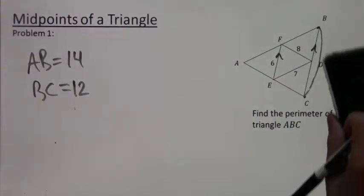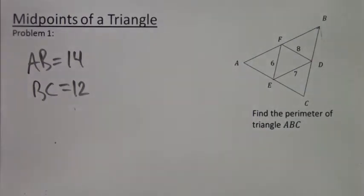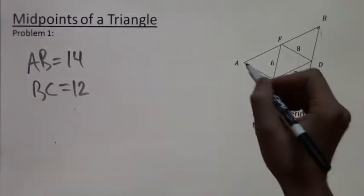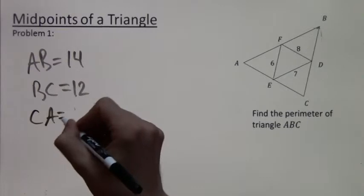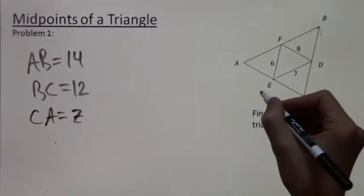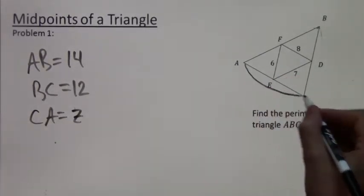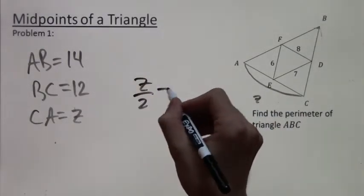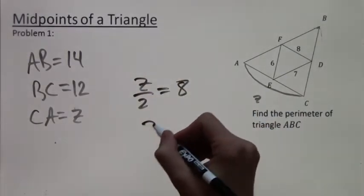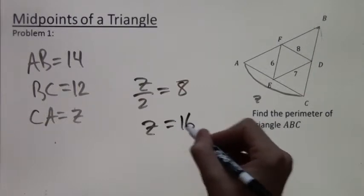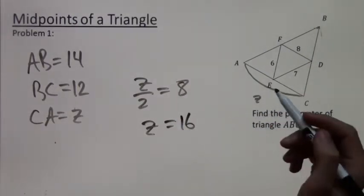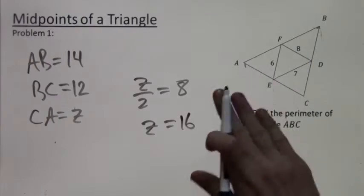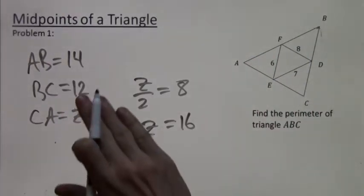And finally, we only have side AC left. So we'll label CA equals Z. And this side, Z, has Z over 2 equals to 8, because 8 is the midsegment corresponding to AC. So we solve, we just multiply by 2, and we get Z equals 16.